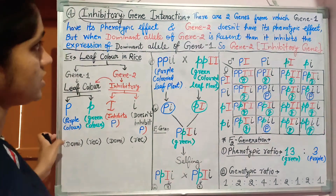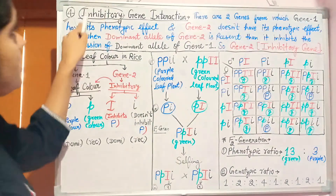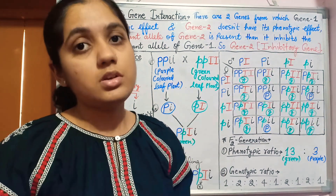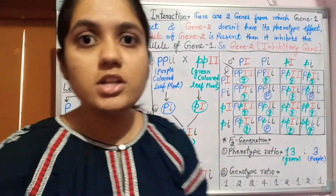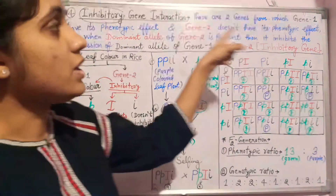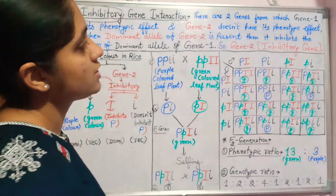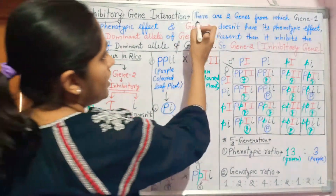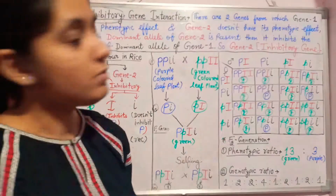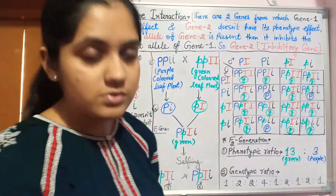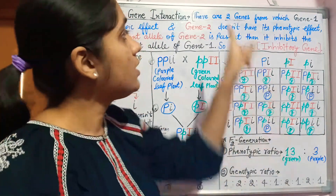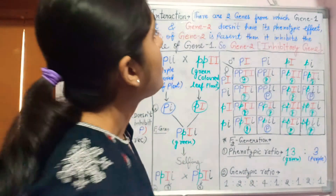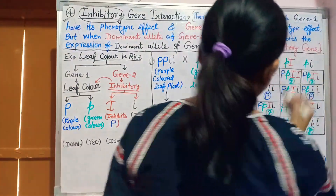The fourth type is the inhibitory gene interaction. In this interaction, some type of inhibition occurs. We will study the range and limits of the inhibition. To understand the definition: there are two genes — we know there are two genes because we are studying intergenic gene interaction — and these two genes naturally react with each other and change the phenotype.